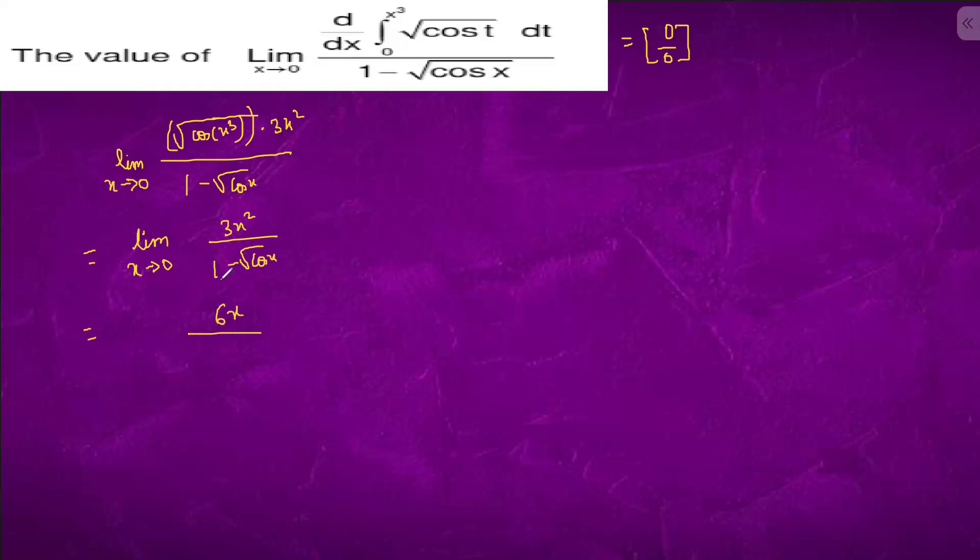It will become 6x, and this will become minus 1 by root cos x and root cos x. So it will become limit x tending to 0, it will again come out to be 6√cos x.